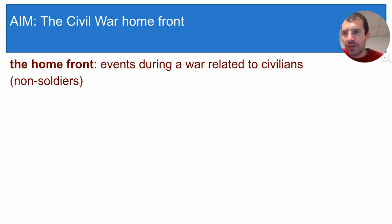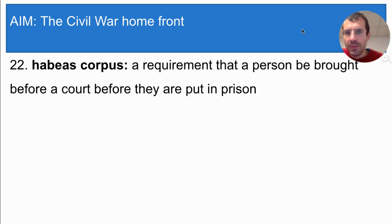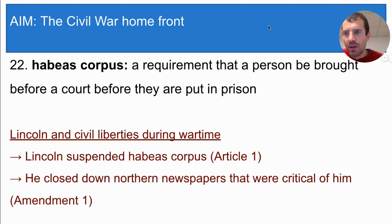Let's look first at how, as is common during times of war, the government restricted people's civil liberties. Habeas corpus is a Latin phrase for a certain legal right — the right of the accused to be brought before a court and told their crime before they are put in prison. This right is found in Article I of the U.S. Constitution. During the Civil War, Abraham Lincoln had a bad record of taking away American civil liberties. Civil liberties are the basic rights guaranteed by the Constitution, and one of the liberties that he took away was habeas corpus.